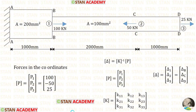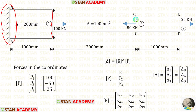Before starting the analysis let us make the coordinates. The end A is fixed, so there will be no displacement. In section B there will be displacement, in section C there will be displacement, and finally in section D there will be displacement. So let us keep the first coordinate in BB, the second coordinate in CC, and the third coordinate in DD.